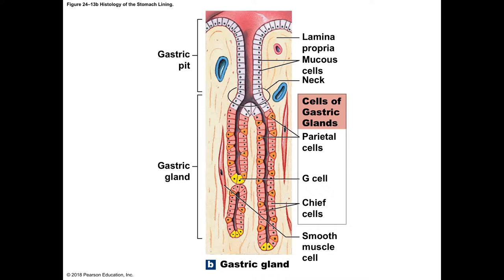Below the gastric pit are the gastric glands, with two main cell types we'll focus on. The parietal cells secrete hydrochloric acid — HCl has a pH of 1, making it extremely acidic, a strong acid. The mucus is there to protect the stomach wall because HCl could easily burn a hole through it. The hydrochloric acid lowers the pH to about 1.5 to 2.0.